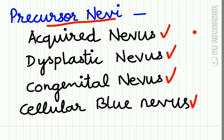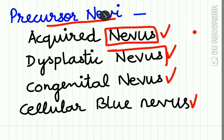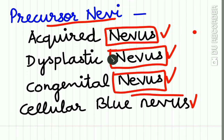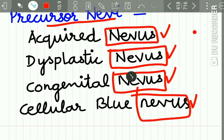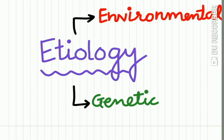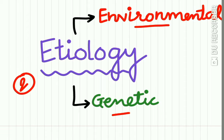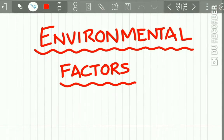We have already uploaded a lecture on nevus and intraoral nevus, so go through that lecture to get a basic idea of all these types of nevus. Now the etiology of malignant melanoma — there are two types of factors responsible: the environmental factors and the genetic factors.